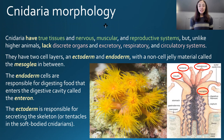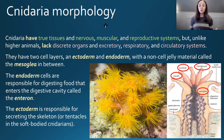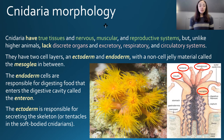In terms of morphology, cnidaria have true tissues — nervous, muscular, and reproductive systems — but unlike higher animals they lack discrete organs and excretory, respiratory, and circulatory systems. They're a little more complex than sponges but not as complex as further phyla. Additionally, they have two cell layers: an ectoderm and an endoderm, with a non-cellular jelly material called a mesoglia in between.